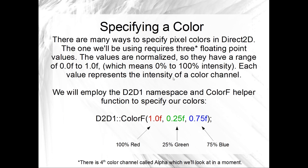There's a fourth channel called alpha, which we'll look at in just a moment. So how do we actually specify an RGB color? We use the D2D1 namespace again, but this time the helper function is ColorF. You'll see this D2D1 namespace a lot — it's just a collection of helper functions, and IntelliSense in Visual Studio will offer you suggestions. Usually I use the normalized floats, so each component — red, green, and blue — can be from 0 to 1, where 0 means 0% and 1 means 100%. We basically just supply a float for each of the RGB channels. So this example here would mean 100% red, 25% green, and 75% blue.